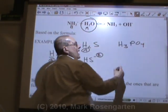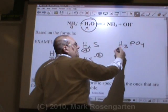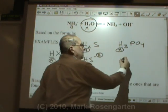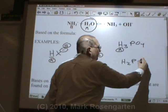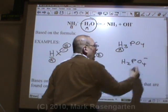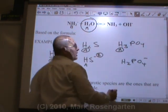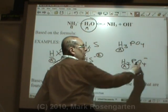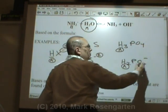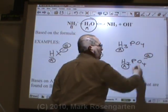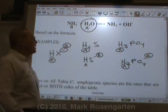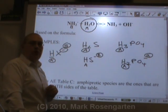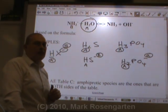H3PO4 can only act as an acid — it has hydrogens to lose. H2PO4- can either lose one of its hydrogens or, because of its negative charge, it can gain another hydrogen. So if the formula has hydrogen and a negative charge, it can be amphiprotic.